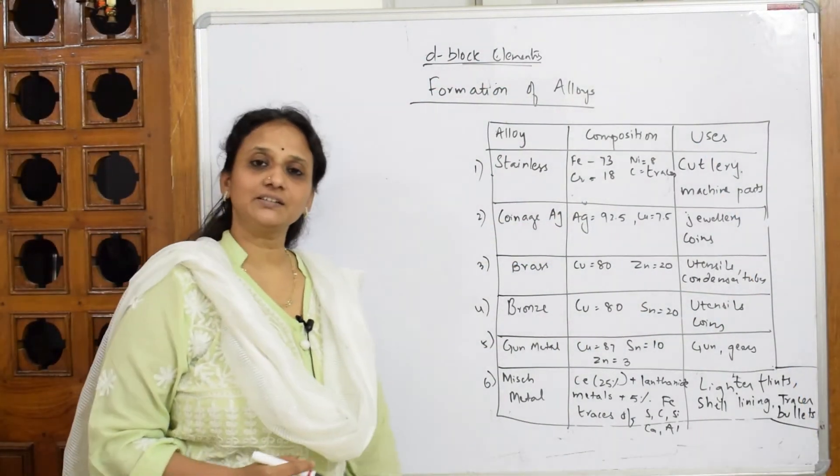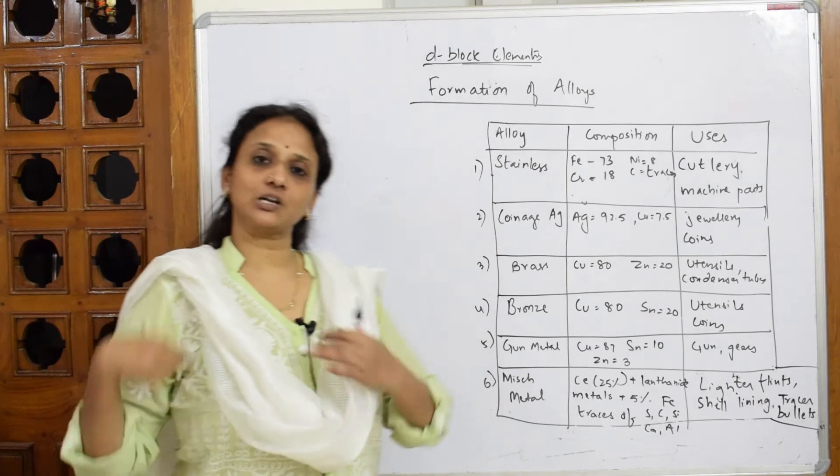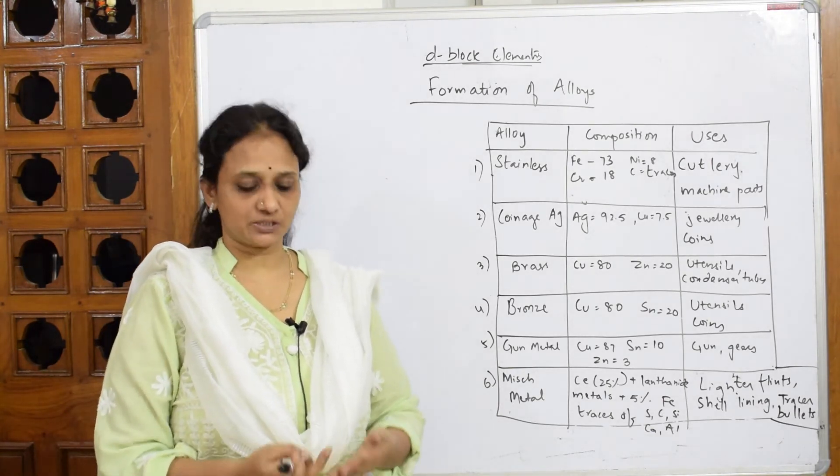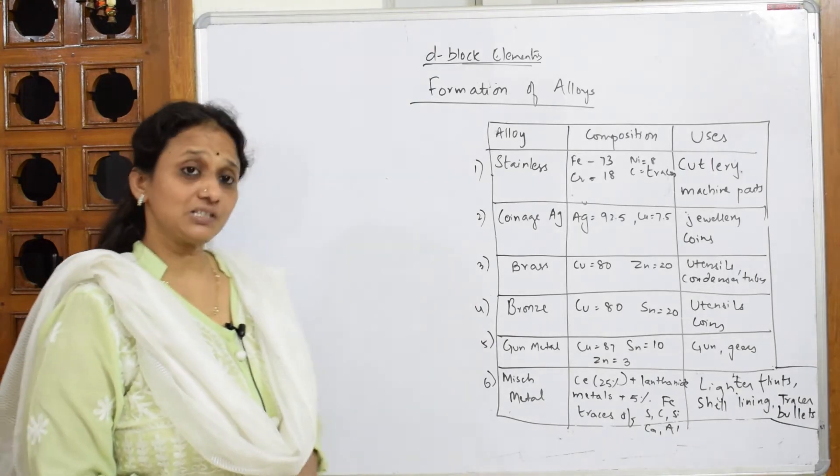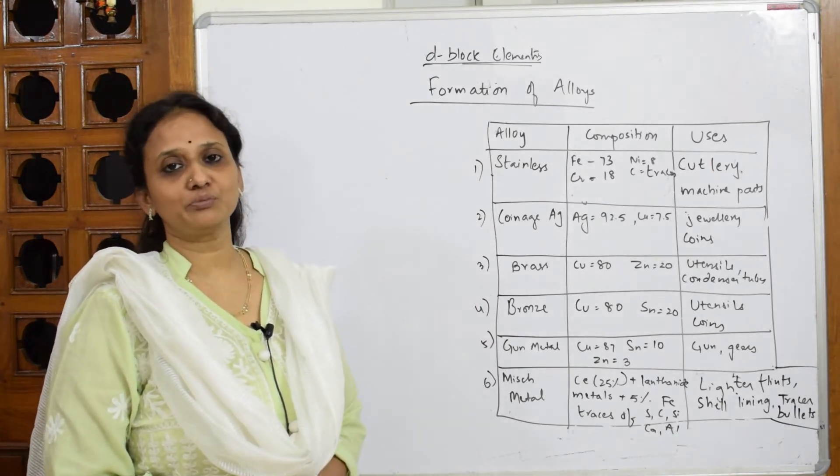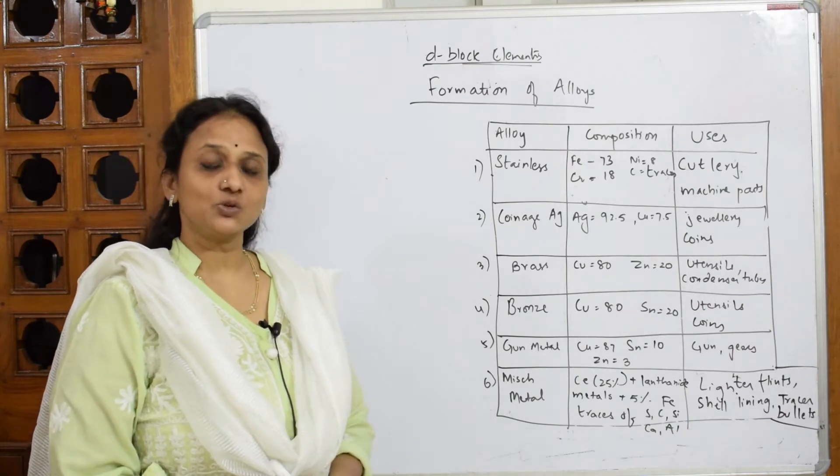Let us come back and see the next property of D-block elements, that is alloy formation. You've already seen a list of catalysts with D-block elements. Now we will be studying alloys. What is an alloy? A combination of two or more metals is called an alloy.